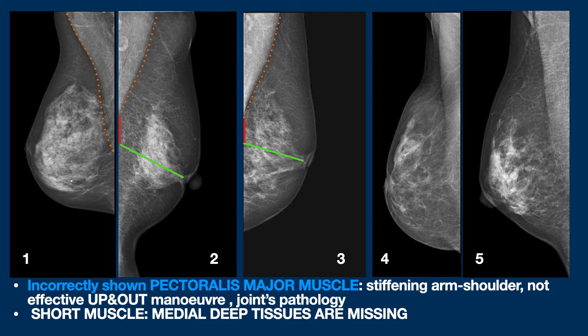I will show you the correction in a moment. I would like first to emphasize this: sometimes the incorrect shape and width of the pectoralis muscle does not result from the radiographer's performance, but from the patient's joint pathology, often revealed by folds in the axillary area.